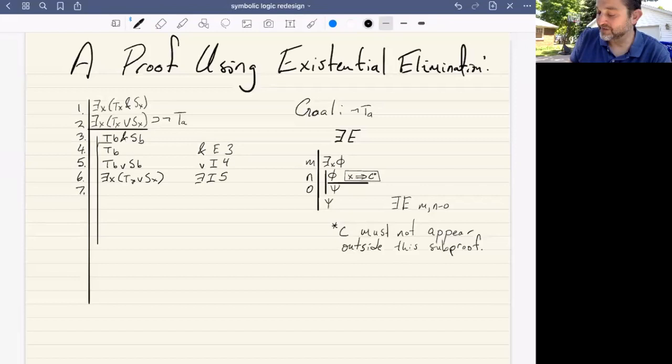Now at step seven, we can use good old conditional elimination to assert it is not the case that A is T, conditional elimination from two and six.